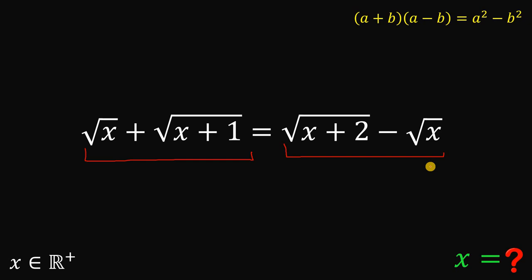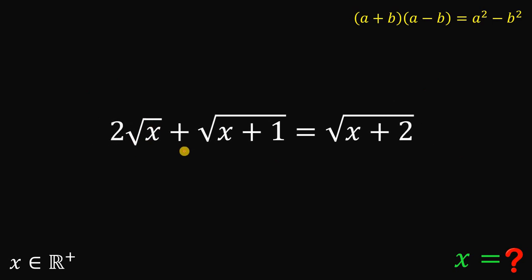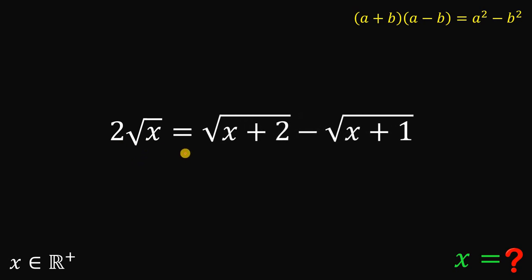On this form, we can now solve for the value of x. To solve for x, let's add square root of x on both sides. If we do that, we get 2 times square root of x plus square root of (x plus 1) equals square root of (x plus 2). Now let's subtract square root of (x plus 1) on both sides. This gives us 2 times square root of x equals square root of (x plus 2) minus square root of (x plus 1).